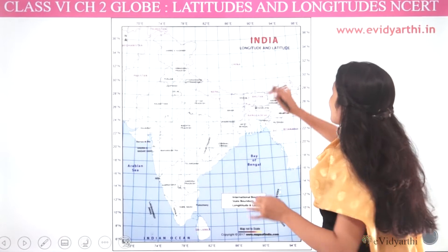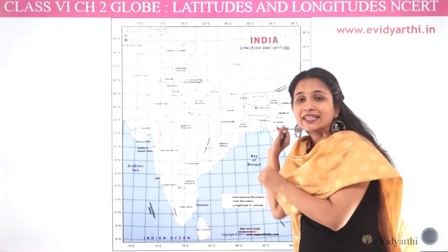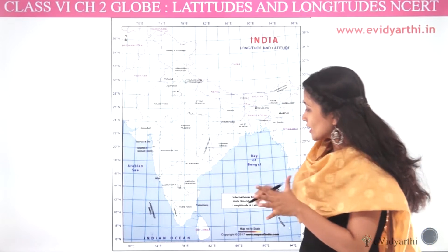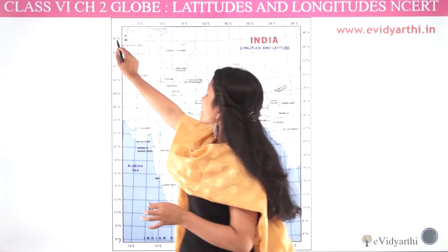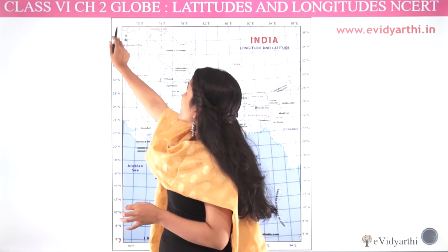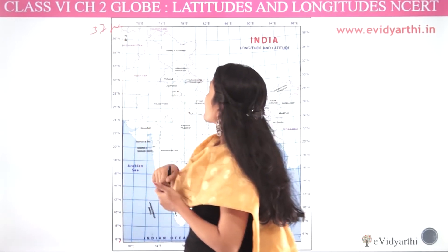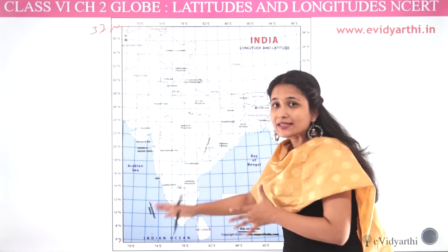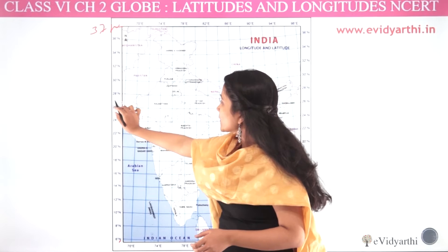Let's look at the lateral lines, which is our latitude. We will see 26 degrees. Here, you can see that we start at 6 degrees and go to 37 degrees. So we find the line at 26 degrees. This is our 26° north.